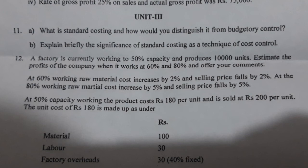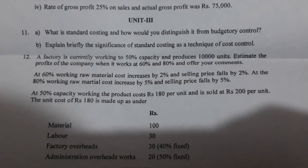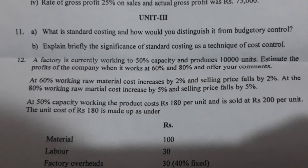In Unit 3, the first option had two sub-questions: what is standard costing and how would you distinguish it from budgetary control? The alternate option was to explain briefly the significance of standard costing as a technique of cost control. There was also a practical: a factory currently working at 50% capacity producing 10,000 units.